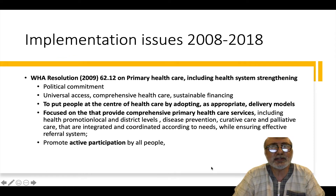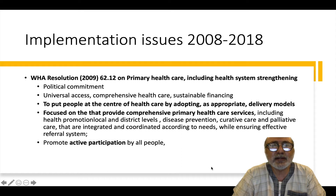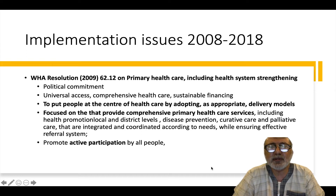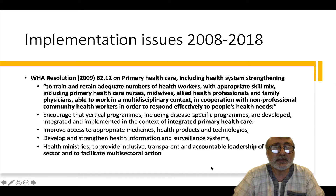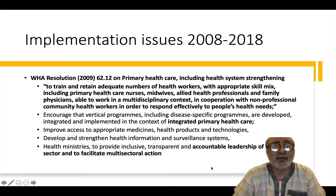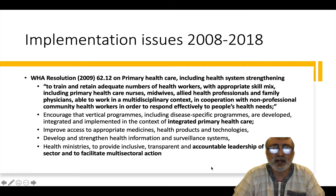What happened between 2008 and 2018? The World Health Assembly resolved in 2009 along the lines of the report, accepting that it needs to put people at the center of healthcare by adopting appropriate delivery models and focusing on comprehensive primary healthcare with active participation by all people. It emphasizes the training of adequate numbers of healthcare workers with appropriate skills mix, including primary healthcare nurses, midwives, allied health professions, and family physicians able to work in a multidisciplinary context in cooperation with community health workers.